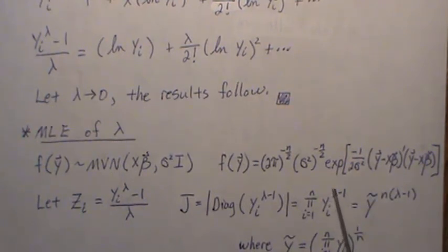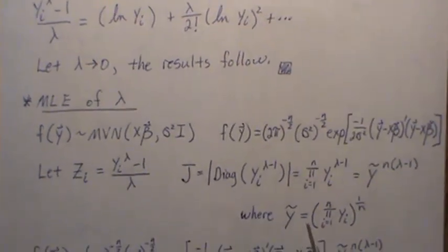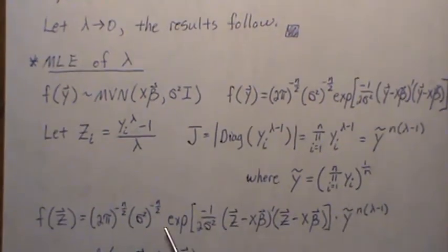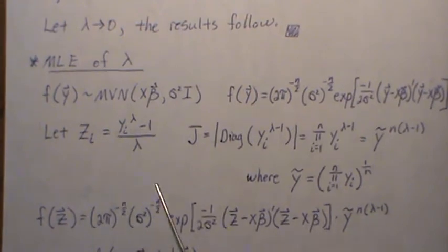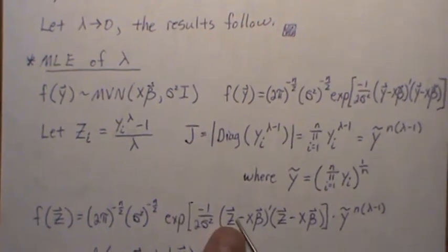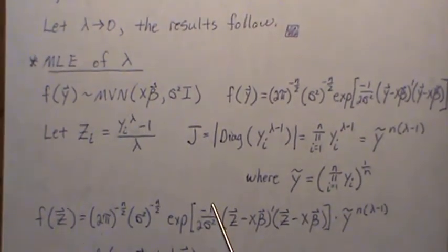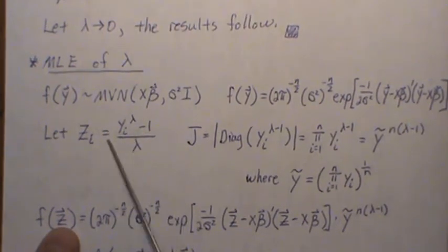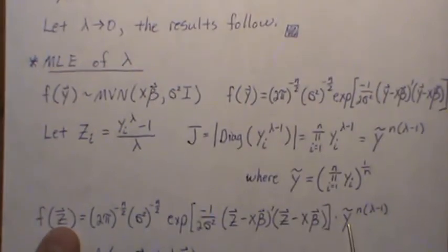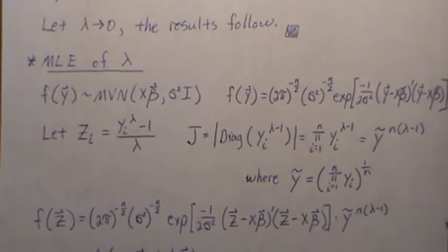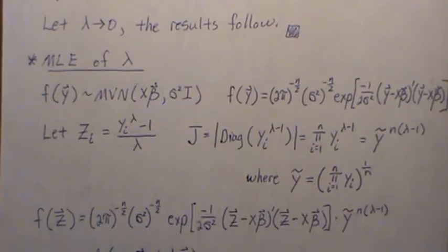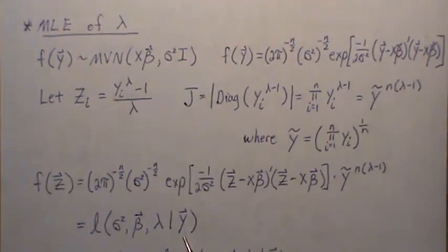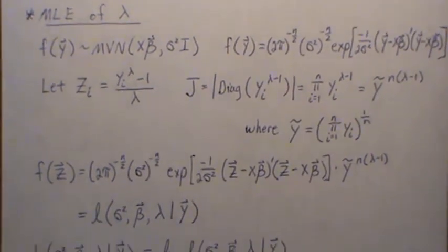If we multiply by n and divide by n, the divide by n can be taken into the product and called y tilde raised to the n times lambda minus one, where y tilde is the geometric mean. So then the density of z — keeping it in terms of y — is this, and the Jacobian is this. This is a function in terms of y; if we wanted it in terms of z we'd back-solve for y and take the inverse Jacobian. But we keep it in terms of y because that's the data we're working with. So this is the density in terms of y.